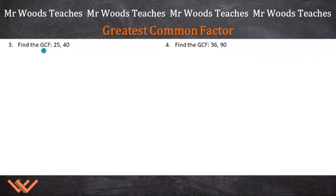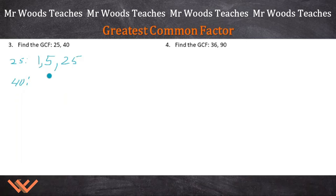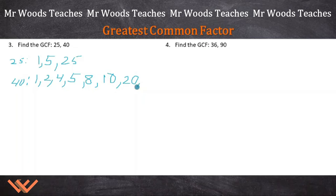Let's continue with GCF of 25 and 40. For 25: 1, 5, 25 — that's it. For 40: 1, 2 times 20, 4 times 10, 5 times 8, 10, 20, 40. A longer list of factors, but we're looking for the greatest common factor, and that's going to be 5.